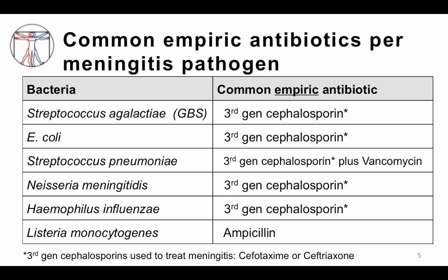However, there are two caveats. First, third generation cephalosporins are not active against Listeria monocytogenes, so ampicillin is the drug of choice. For streptococcus pneumoniae, a third generation cephalosporin plus vancomycin is recommended. Vancomycin is used here because there is increasing penicillin resistance in streptococcus pneumoniae, and some of that resistance also confers cephalosporin resistance. So we recommend giving vancomycin upfront until we have susceptibility results back to make sure we're treating appropriately.